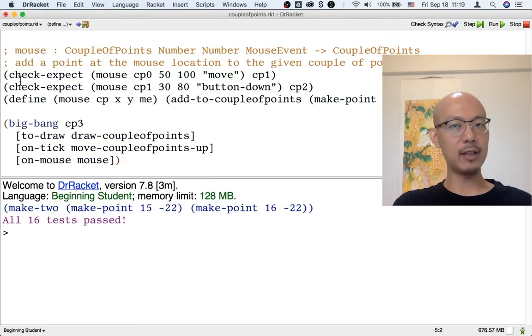The more reliable way, and the way you should always use, is to use check-expect to test the functions that make up the Big Bang. So, we have tests for all three functions, we have tests for draw-coupleofpoints, we have tests for move-coupleofpoints-up, and we have tests for mouse. All 16 tests pass, which give us far greater confidence that our Big Bang can work.